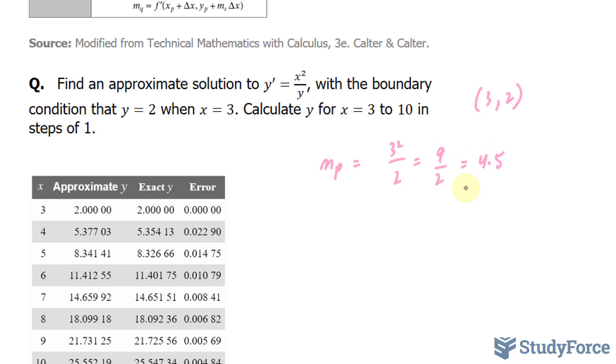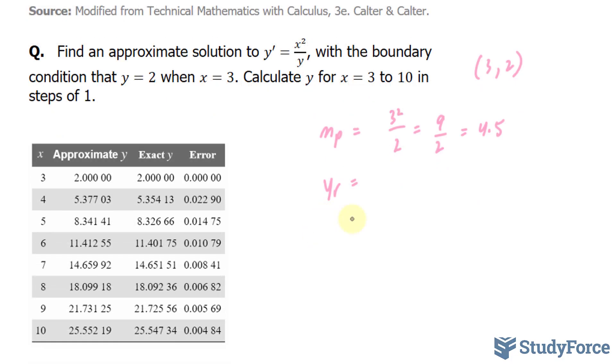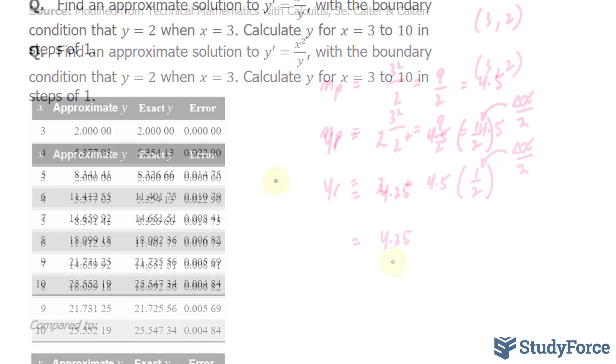Once you find m_p, you need to use it to find y_r. To find y_r, we take our previous y-coordinate, which in our case is 2, and we add it to the value we just found for m_p, multiplied by the steps, which in our case is 1, divided by 2. So 1/2, and technically this is equal to Δx/2. If we calculate this, we should end up with a y_r value of 4.25.